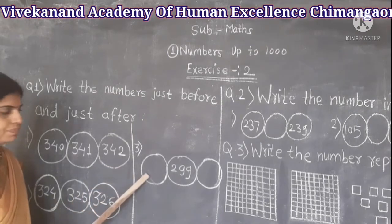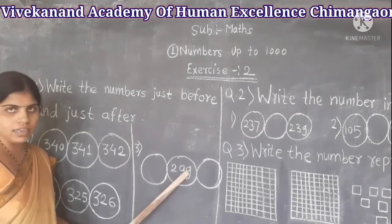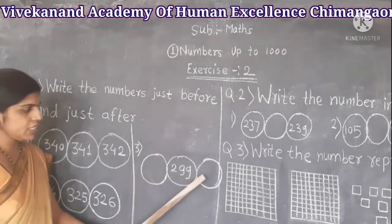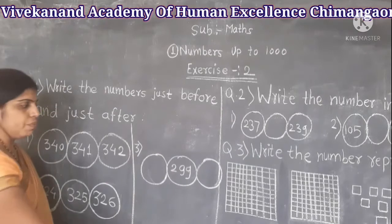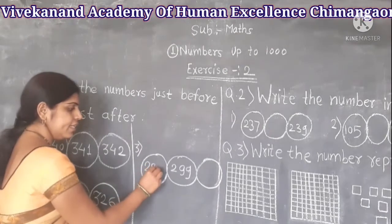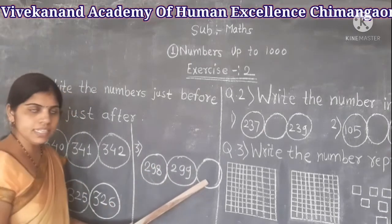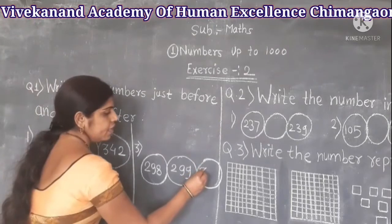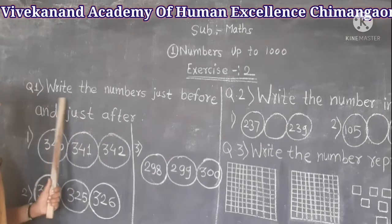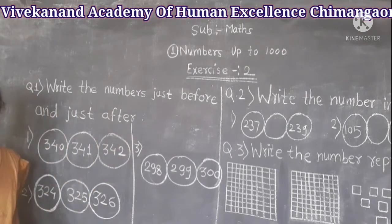Third example: we have been given the number 299. We have to write the just before number and just after number. The before number of 299 is 298, and the just after number is 300.